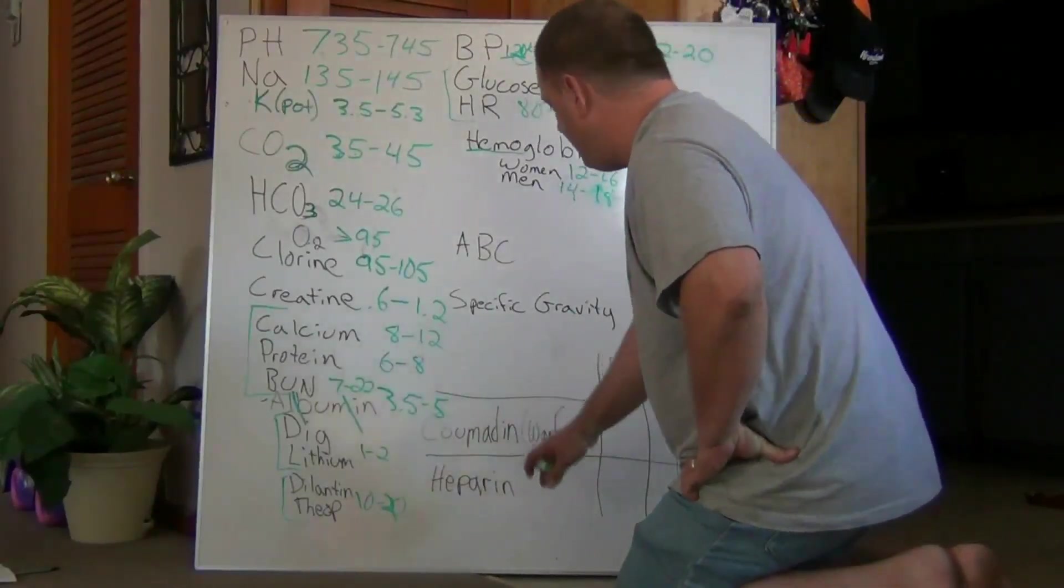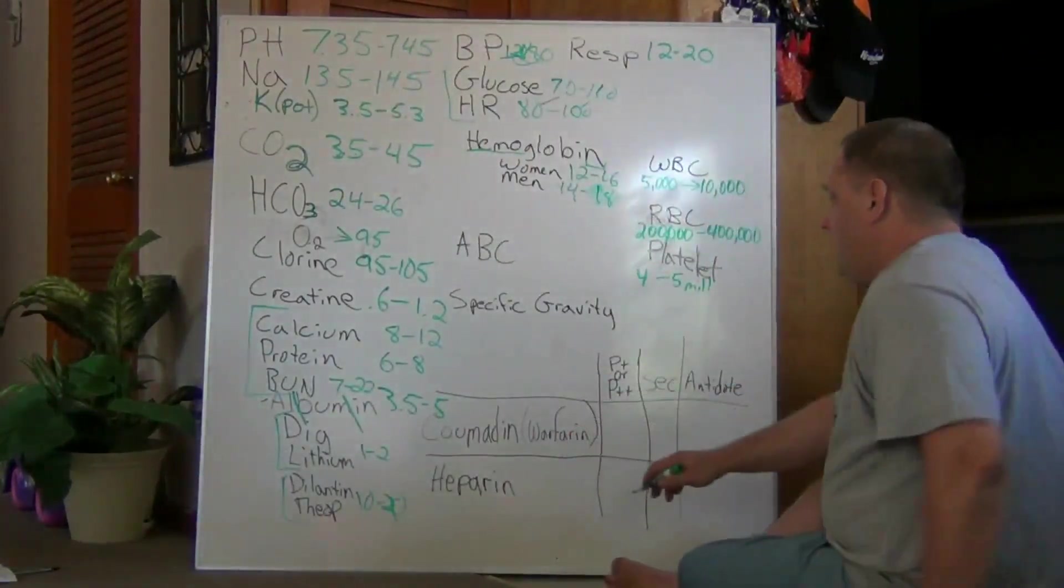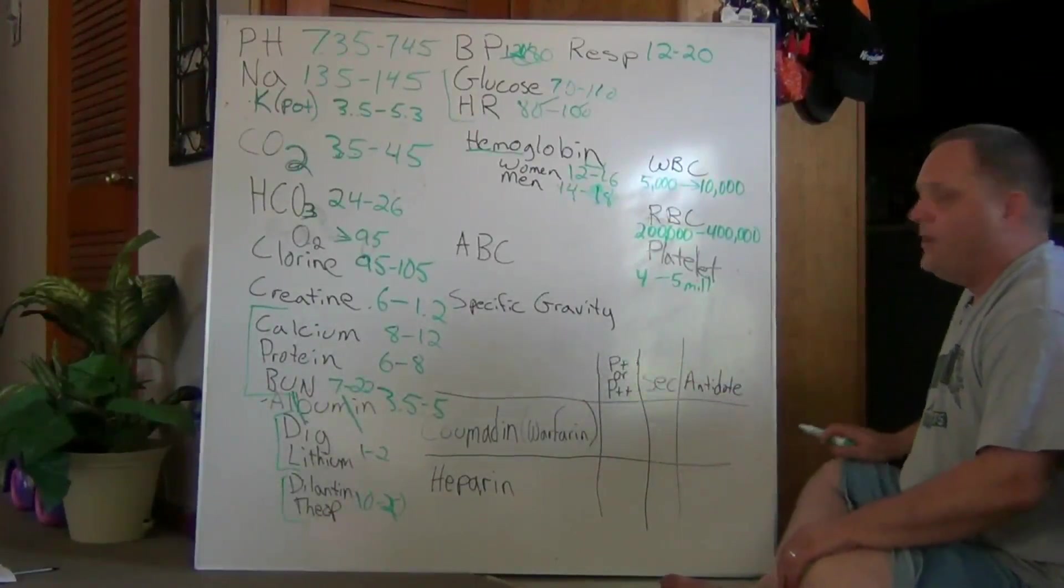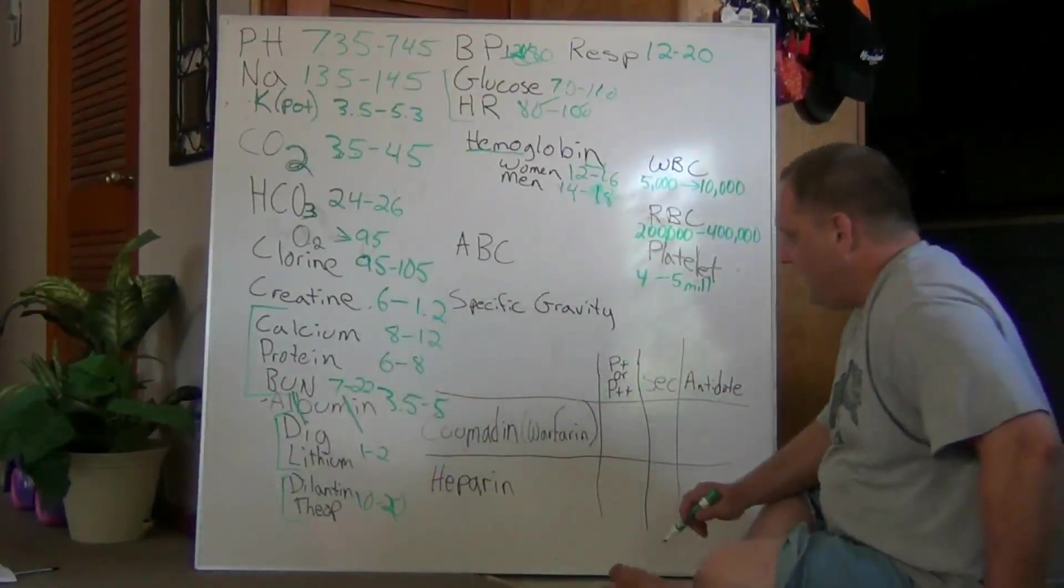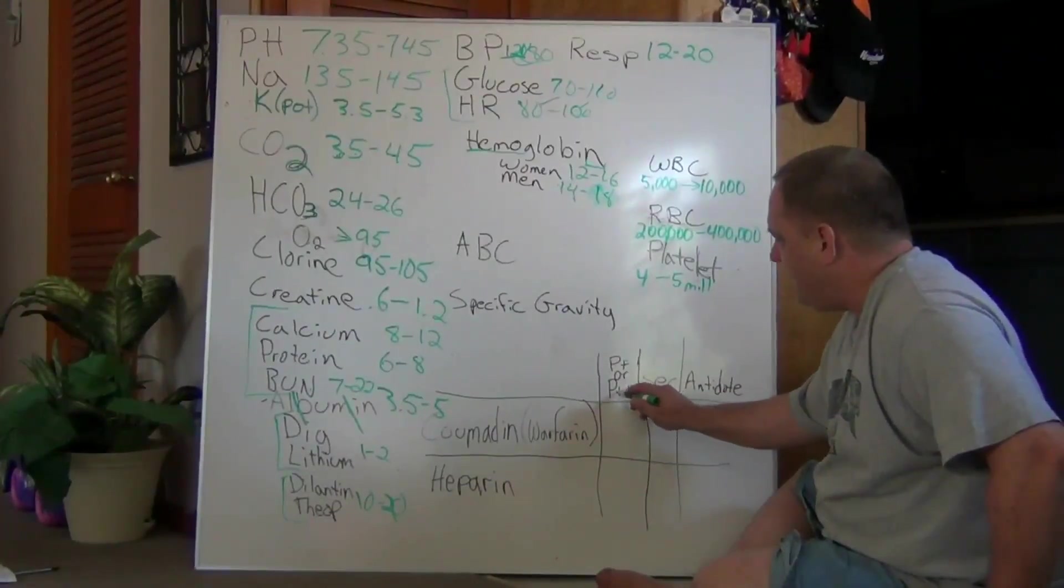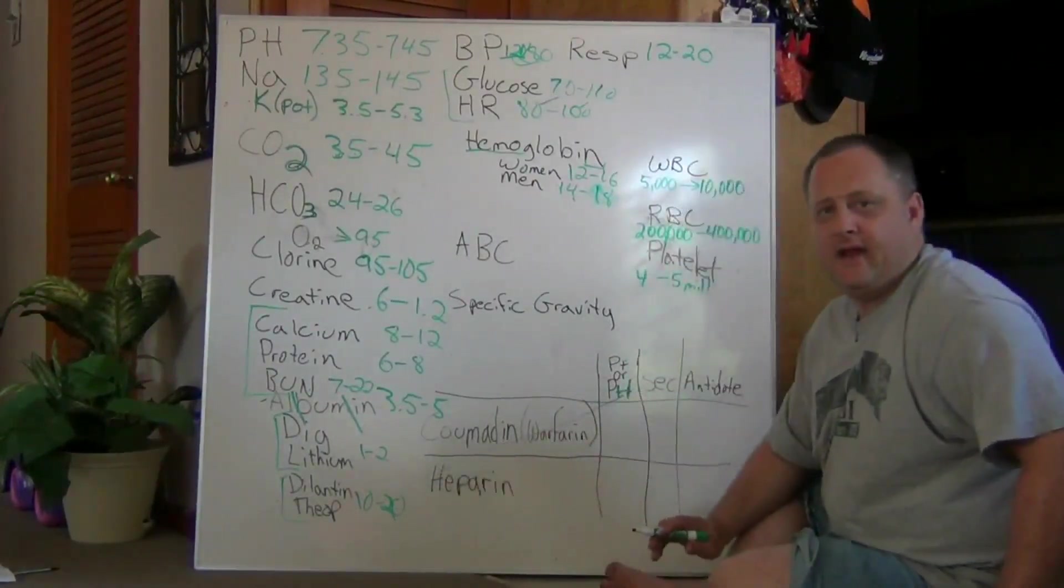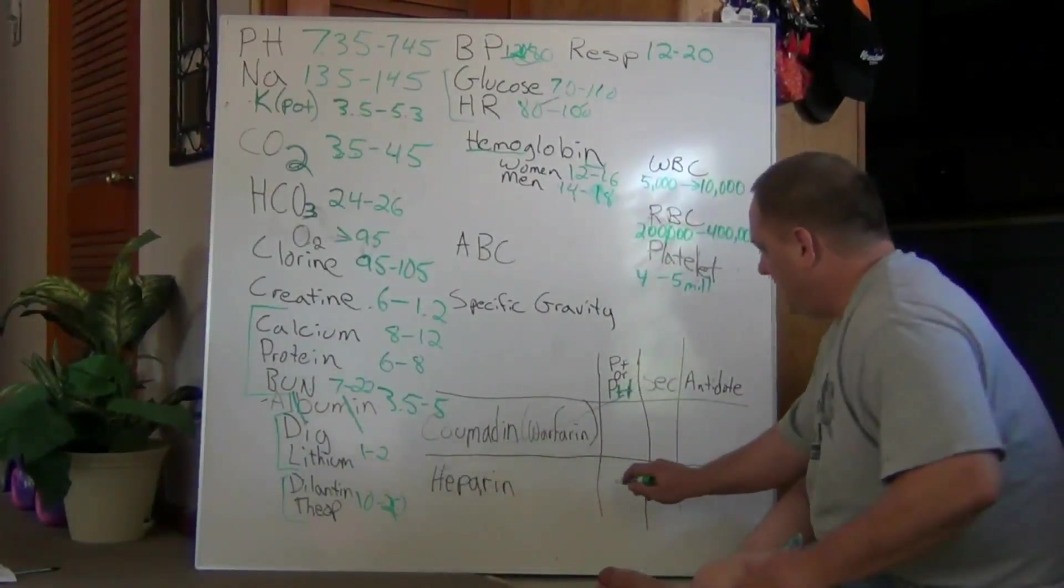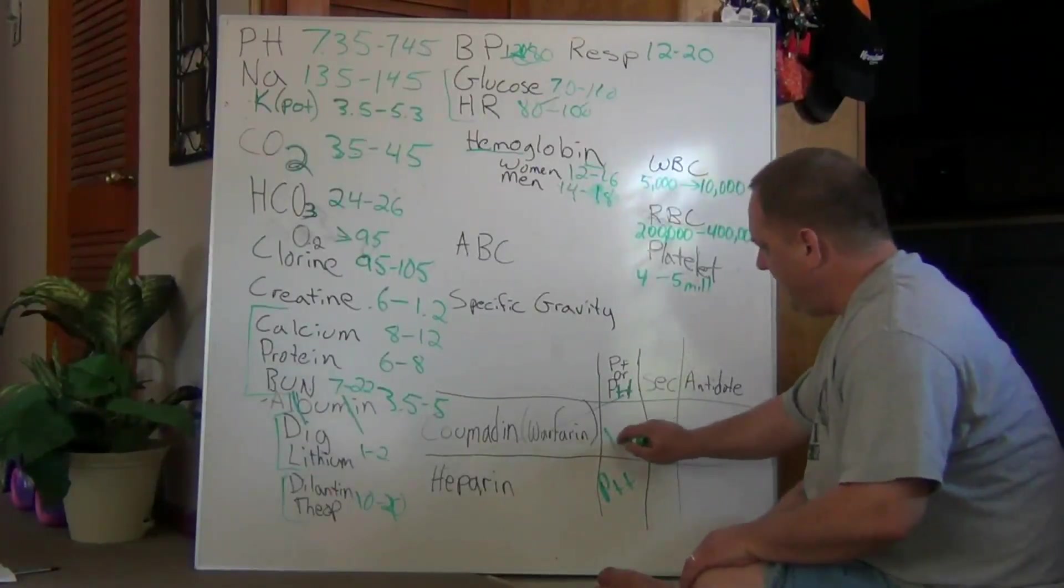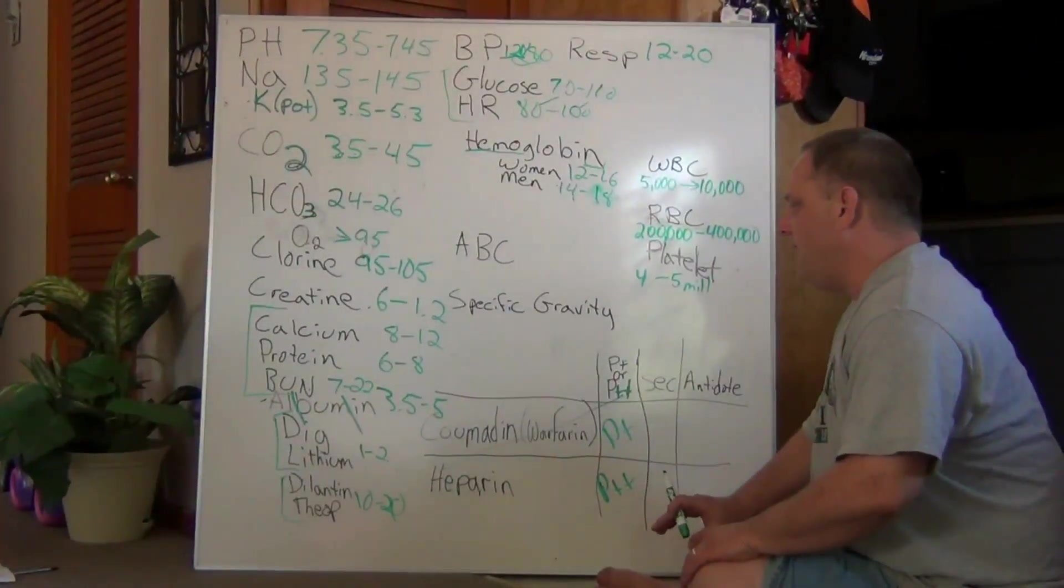Now we'll go down here to Coumadin and Heparin real quick. On Coumadin, let's figure out which one's PT or which one's PTT. And how I remember it is that the TT here in PTT makes an H. So I know that PTT goes to Heparin. So PTT here and PT here.